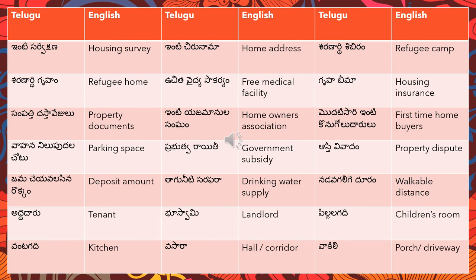'Taguniti sarfara' means drinking water supply — 'taguniti' means drinking water and 'sarfara' means supply. 'Nadavagalige dhoram' means walkable distance — for example, the MRT or metro station is within walkable distance from home: 'mrt my inti nunchi nadavagalige dhoram lo undi'.